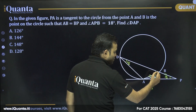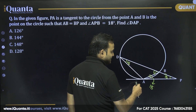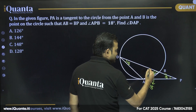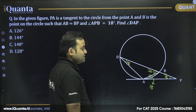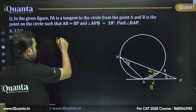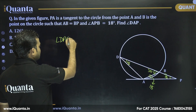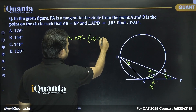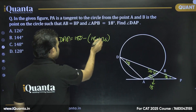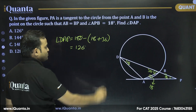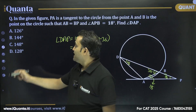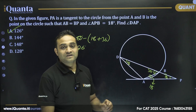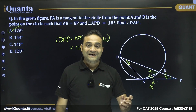Angle DBA acts as the exterior angle of triangle ABP, so it equals 18 + 18 = 36 degrees. Now angle DAP equals 180 − (18 + 36) = 180 − 54 = 126 degrees. Our answer is option A. This is a really good question based on properties of the angle made by a chord with the tangent.